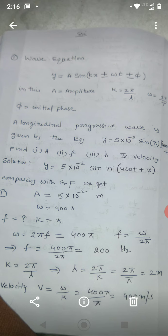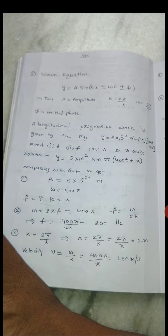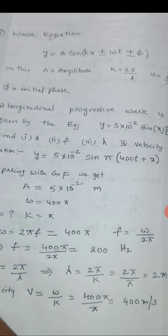Now, we will move to wave equation. What is general form of wave equation? General form of wave equation is y equals a sin kx plus or minus omega t plus or minus phi.